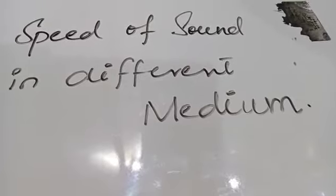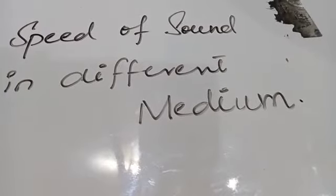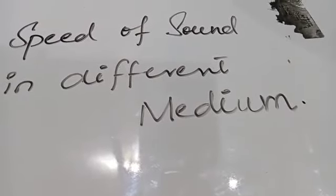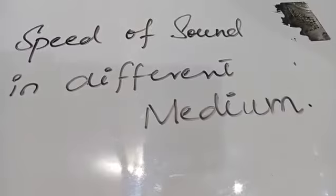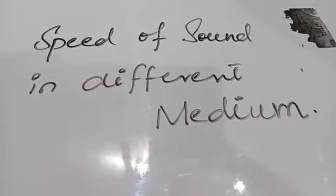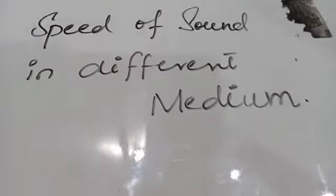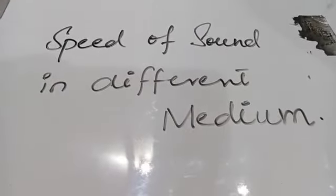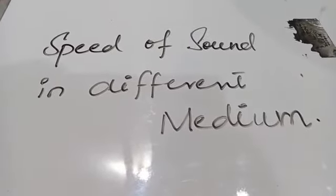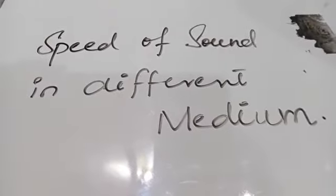Sound travels faster in solids than in liquids. The speed of sound in solids is five times larger than in liquids, and 15 times larger than in gases. The speed of sound in air is affected by changes in physical conditions such as temperature, pressure, and humidity. The speed of sound in air is 343 meters per second at one atmosphere of pressure and room temperature of approximately 21 to 25 degrees Celsius.